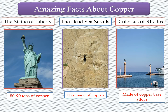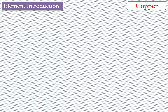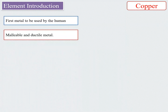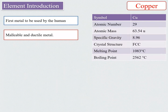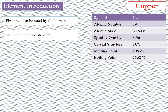To understand these things we need to understand the basics of copper, including its properties and behavior. Copper was one of the first metals used by man. Copper and its alloys are most commonly used in various applications because copper is a malleable and ductile metal. Copper is a non-ferrous metallic element; Cu is used as its symbol, with atomic number 29 and atomic mass 63.54 amu. The specific gravity of copper is 8.96, its crystal structure is FCC at room temperature, its melting point is 1083°C, and its boiling point is 2562°C.